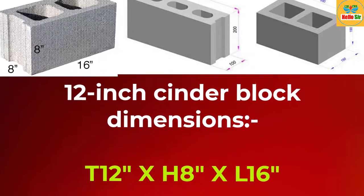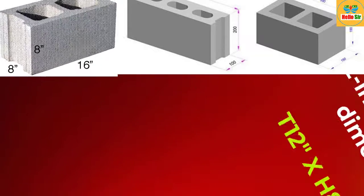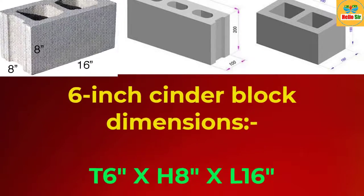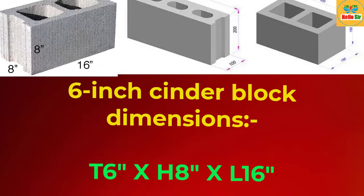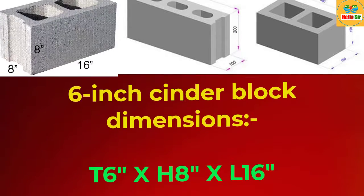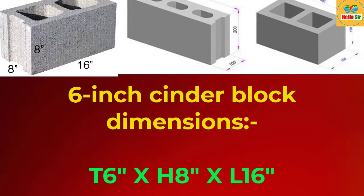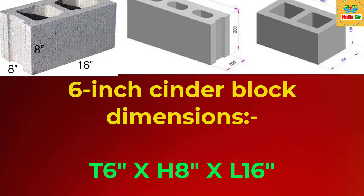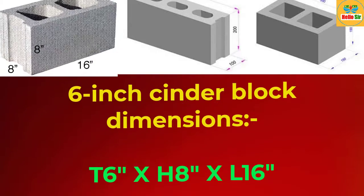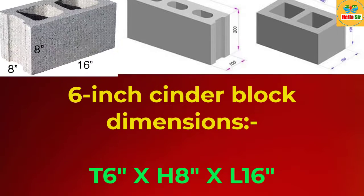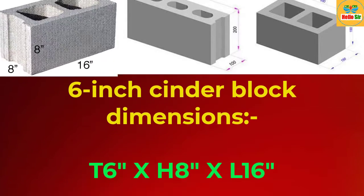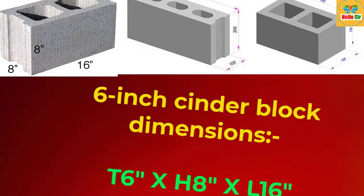6-inch cinder block dimension: The nominal dimension of a 6-inch full cinder block is 16 inches long by 8 inches high by 6 inches wide.